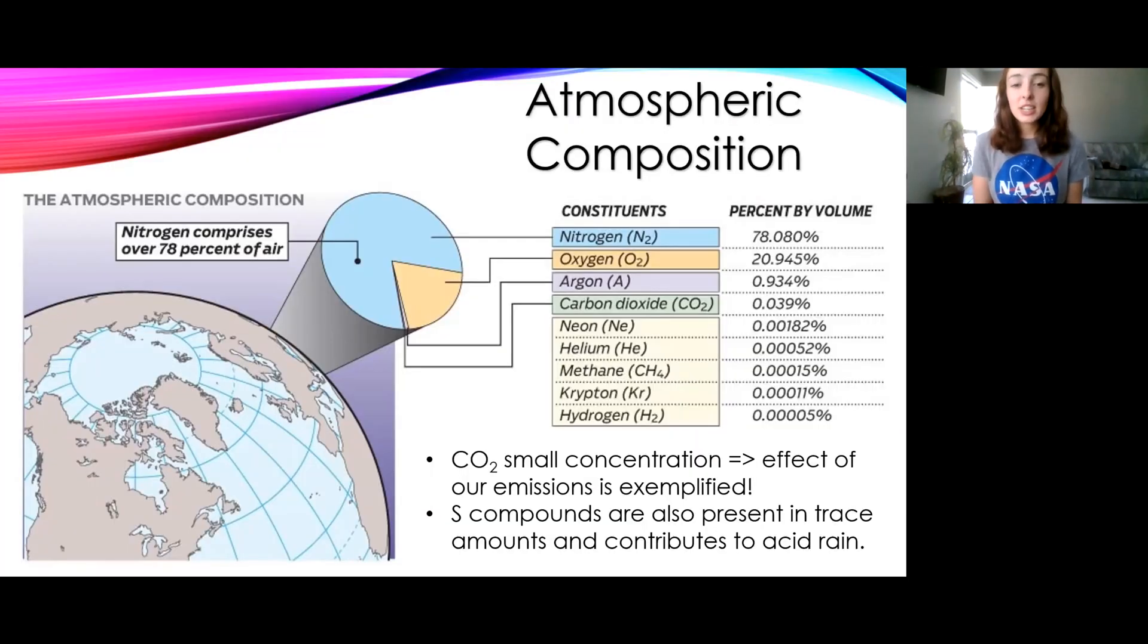This is the depiction of a pie chart as well as a list of what's in the atmosphere. Basically the most abundant thing in the atmosphere is nitrogen. Oxygen is the second most at around 20%, and then there is argon at the third most, but it's only about 1%, and the rest are pretty trace amounts.